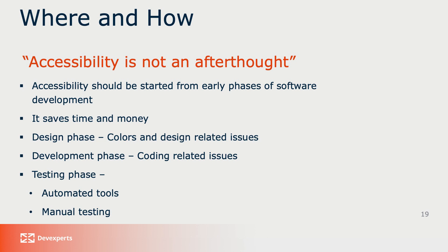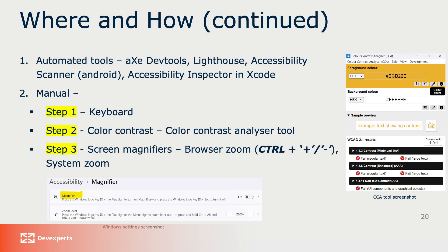How we do it: we use the axe tool — it's a browser extension, so you can simply add this extension and scan your page. Then there's Lighthouse, which is a built-in Chrome tool. Then there's Accessibility Scanner, which is an Android app. If you have a MacBook, you can install Xcode and find the Accessibility Inspector option there, and scan your content using these automated tools. As per our experience, these will cover at least 30–40% of issues.